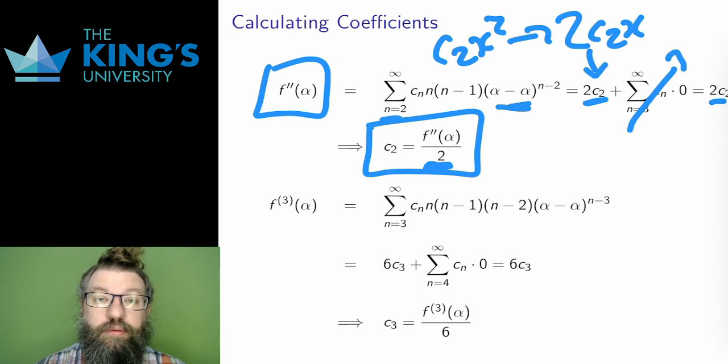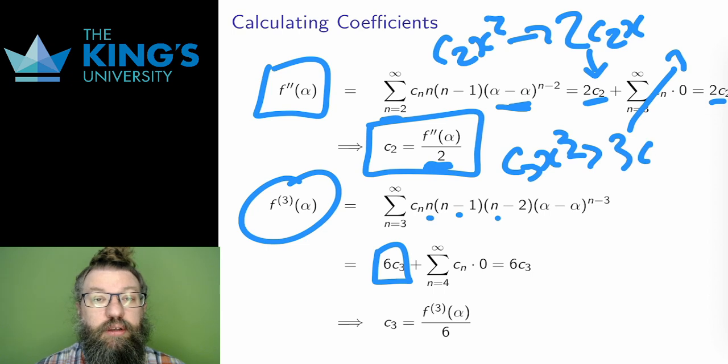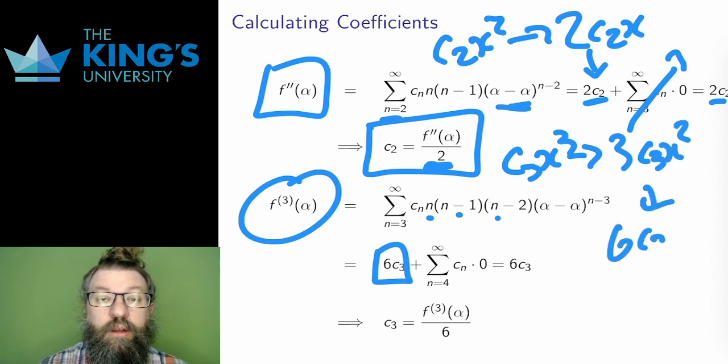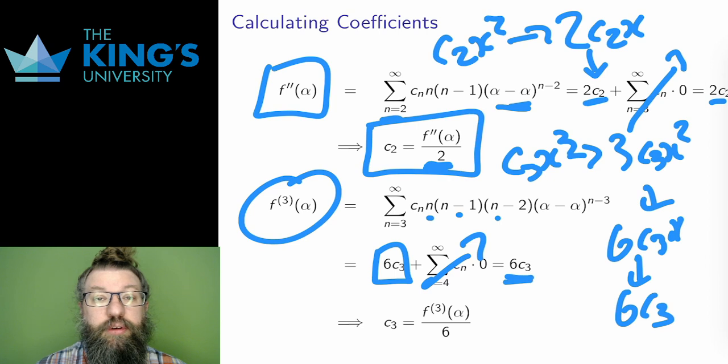Now onto the third derivative. Three terms are now gone. The c3x to the 3 term from the original has been differentiated three times, which gives a constant of 6c3. The 6 is from pulling down 3, and then pulling down 2, and then pulling down 1 when I do the derivatives. Everything else is zero as before. Therefore, the c3 coefficient is the third derivative evaluated at the center point, divided by 6.